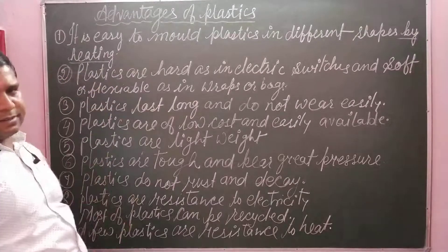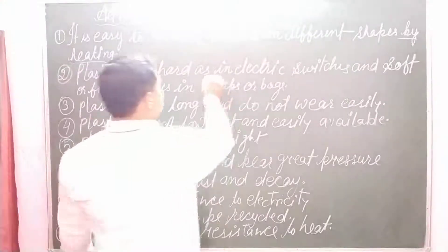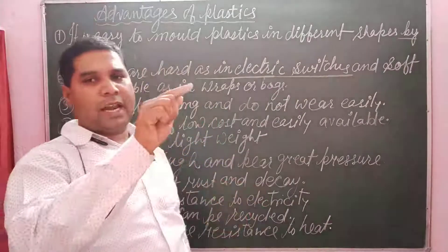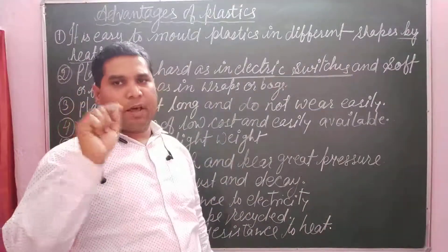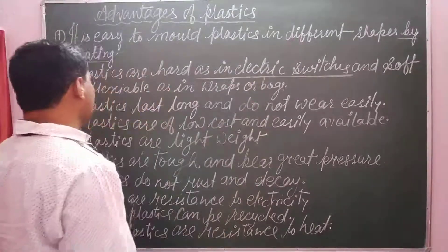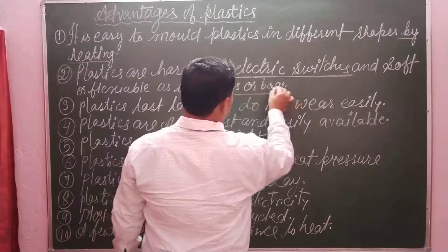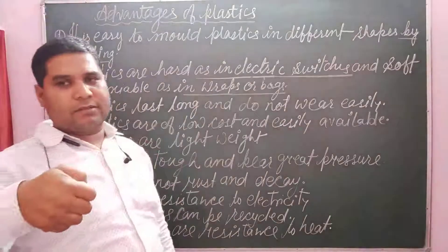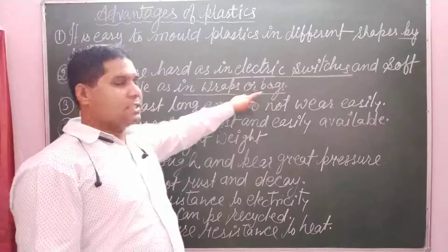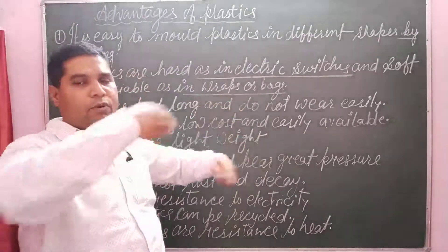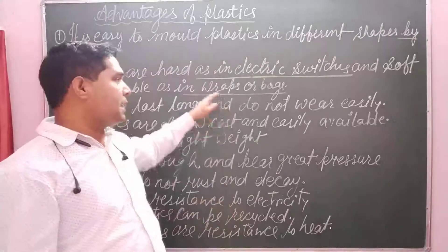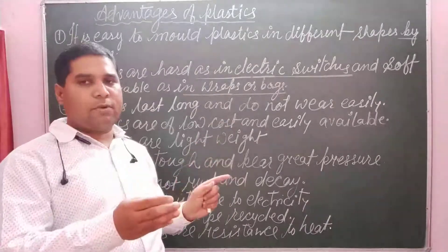Second, plastic are so hard as in electric switches. Dear student, you may have seen in home electric switches are being made of plastic. They are hard as an electric switch and soft as a wrap or bags. You may have seen polythene bags are made up of plastic. They are soft as a polythene bag or also for wrapping, for covering certain type of devices, electronic devices or medical devices are being wrapped so that it remains safe from damage.